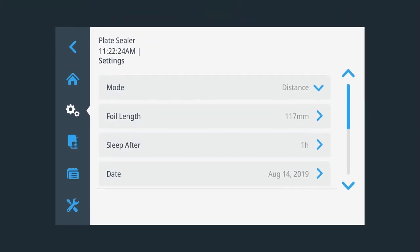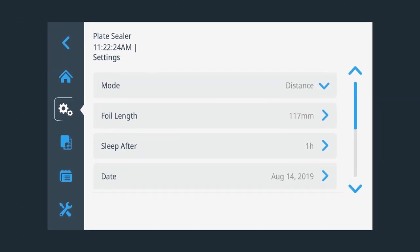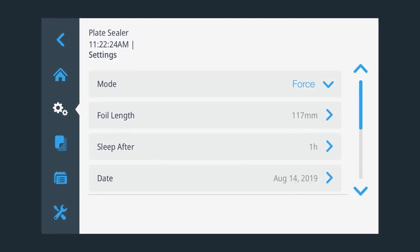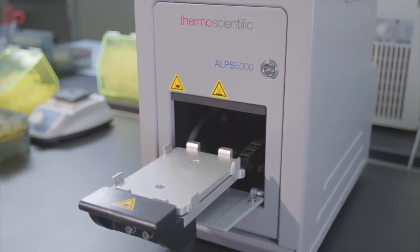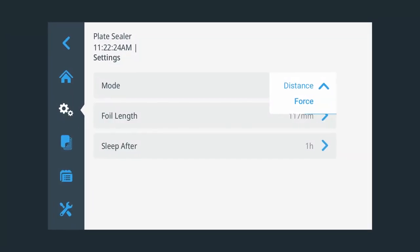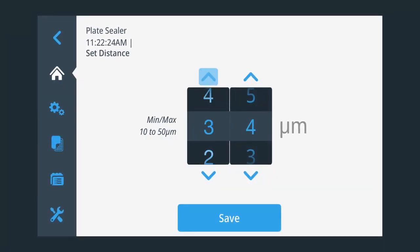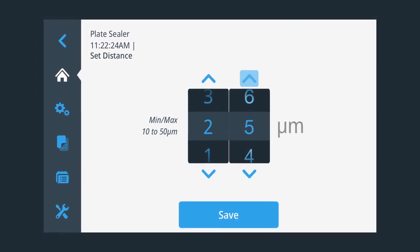With mode options, you can choose between force or distance sealing. When you choose the traditional force mode, the unit applies consistent force with the heating element against the plates and seal. Distance mode, on the other hand, allows the heating element to travel a preset distance rather than applying a preset pressure to the plate.